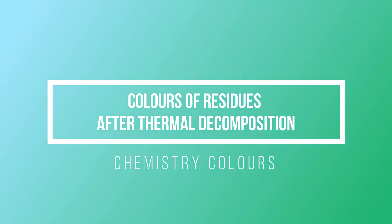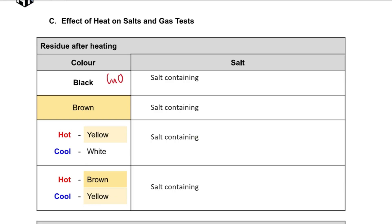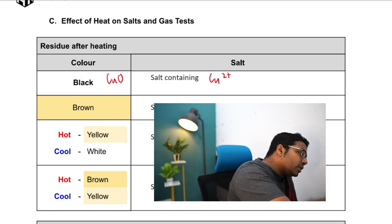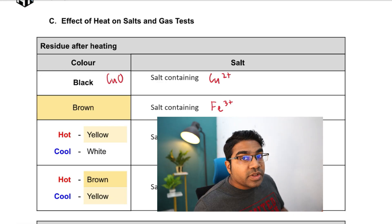Next, let's look at the colors of residues after thermal decomposition — the process of heating a salt until it decomposes. If a black residue forms, it indicates the presence of copper(II) oxide, CuO, meaning the original salt contained Cu2+ ions. If a brown residue was formed, the original salt contained Fe3+ ions — all brown colors here are linked to Fe3+.